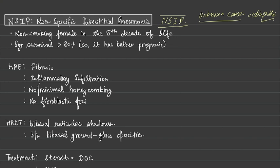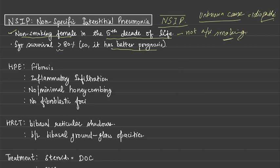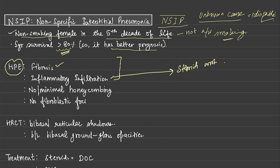The classical patient that we see is a non-smoking female in the fifth decade of life. So this is one kind of ILD which is not associated with smoking. It is defined by inflammation — there is inflammatory cell infiltration. It carries a better prognosis than other types of ILD; the median survival is more than 5 years and survival is more than 80% in these cases. On histopathological examination you will see fibrosis and inflammatory infiltration, and because of the inflammatory infiltration, steroids work in this disease.